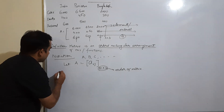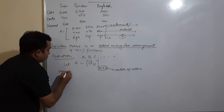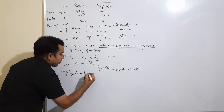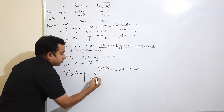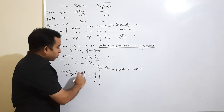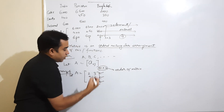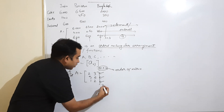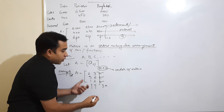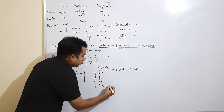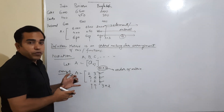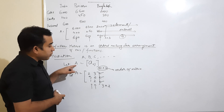For example, suppose a matrix has entries 2, 3, 5, 6, 1, 2. How many rows does it have? One, two, three — it has three rows. How many columns? Only two columns. So this is a 3×2 order matrix. That is the way we write a matrix, denote a matrix, and determine its order.